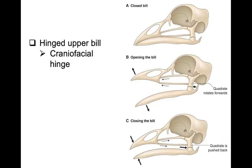Not only do bills vary in size, but they also vary in their ability to open with the pre-maxilla and the dentary independently by using the craniofacial hinge. This is more obvious in some birds than others. Parrots have a very well-developed craniofacial hinge that allows them to move their upper mandible independent of the lower mandible, associated with the quadrate bone rocking back and forth and pushing the upper mandible up or down.